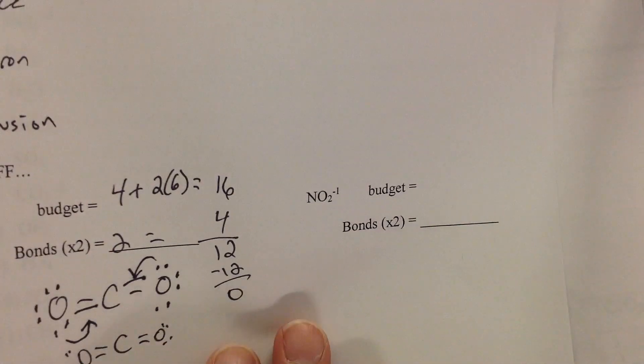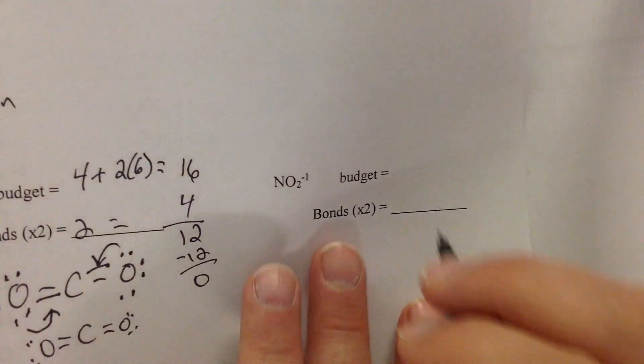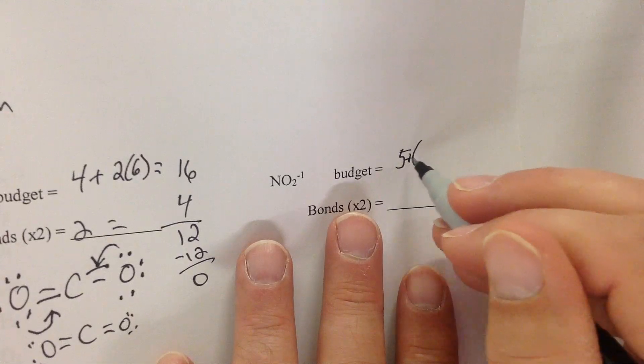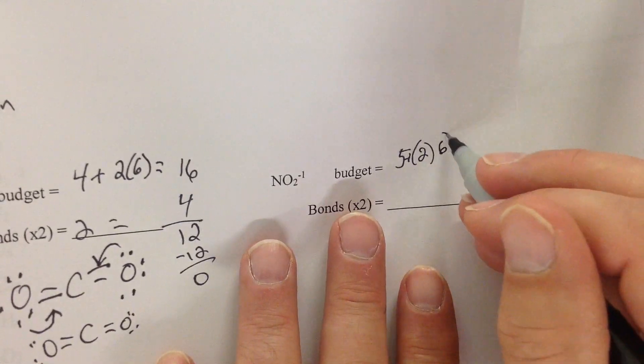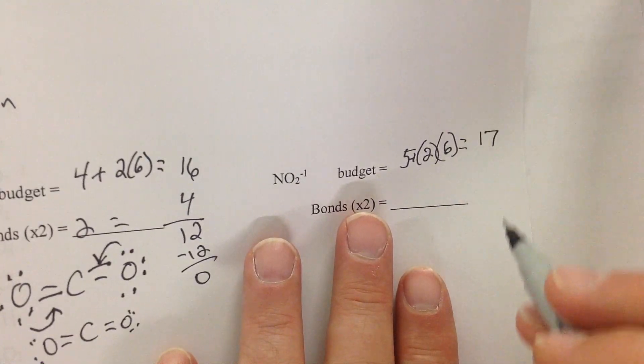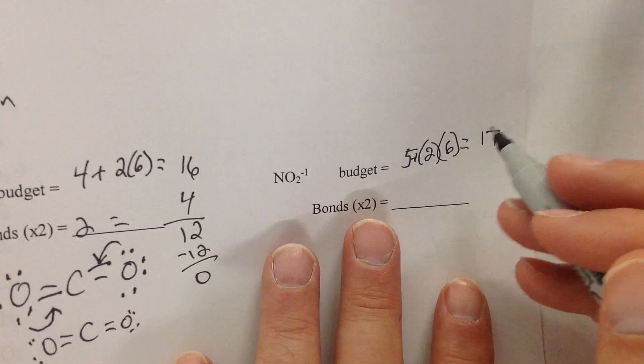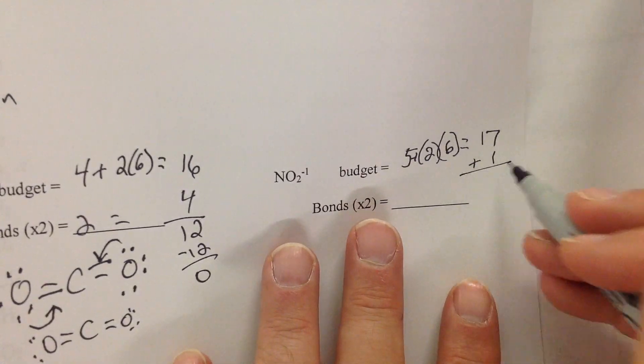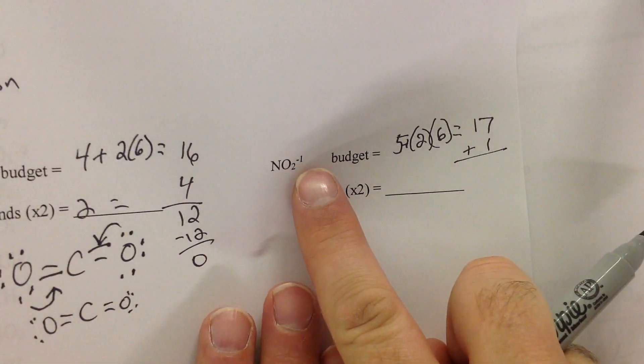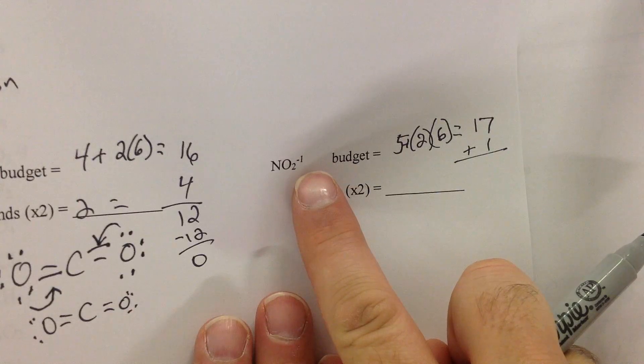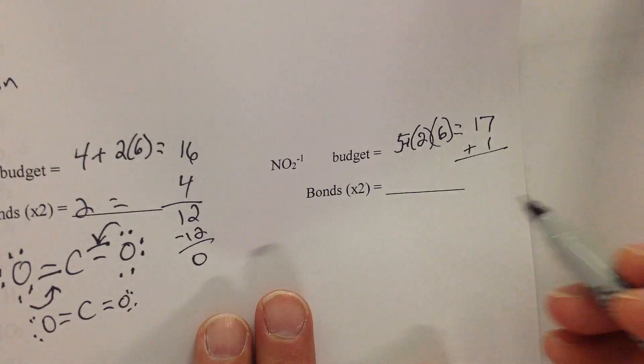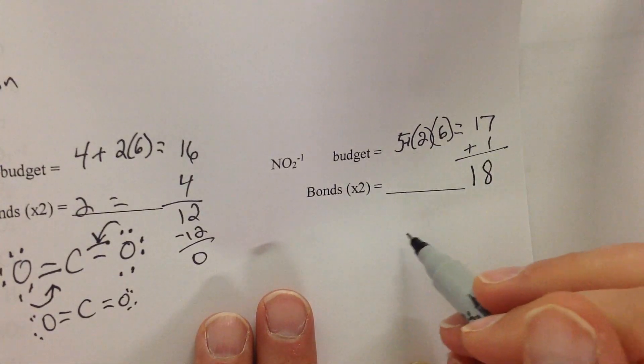Let's try NO2-. What's my budget? Hopefully you're good with the budget. N is 5 and then you've got plus 2 times 6. 12 plus 5 is 17. Plus, ooh, plus 1. Whoa coach, where'd you get that plus 1? When it has a negative charge, you've got to think opposite. It's not taking away an electron, it's giving an electron. So negative 1 is a plus 1. So my total budget is 18.